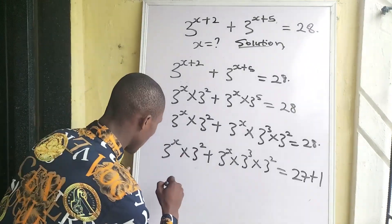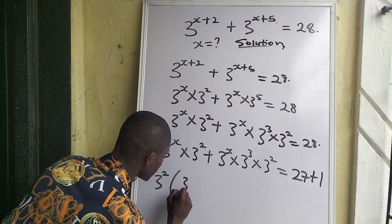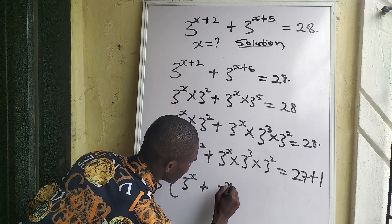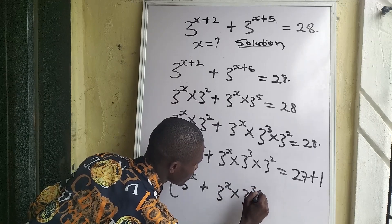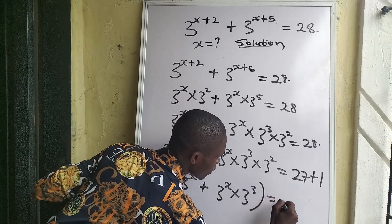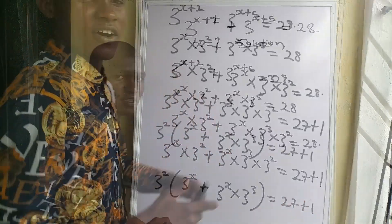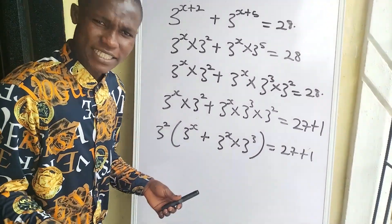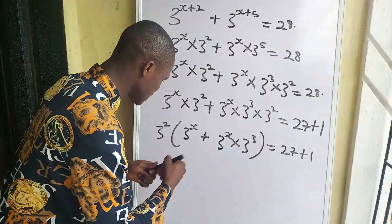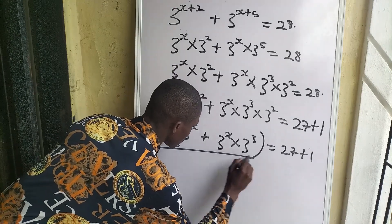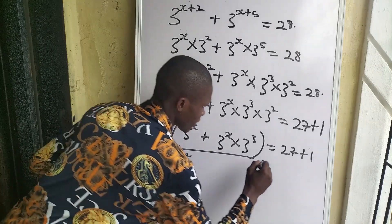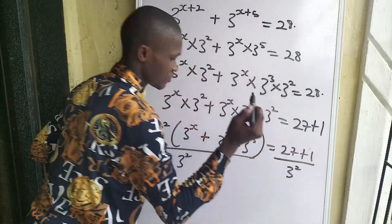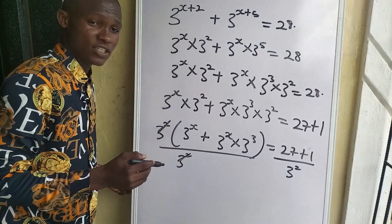Factoring out 3 to the power of 2, we get 3 to the power of 2 times the bracket, equal to 27 plus 1. Then we divide both sides by 3 to the power of 2, and the 3 to the power of 2 terms cancel off.